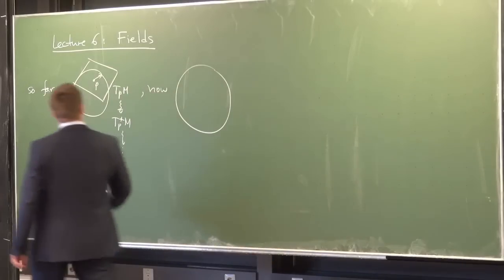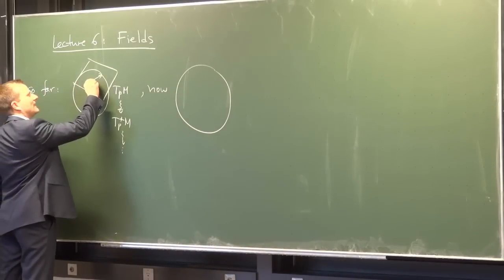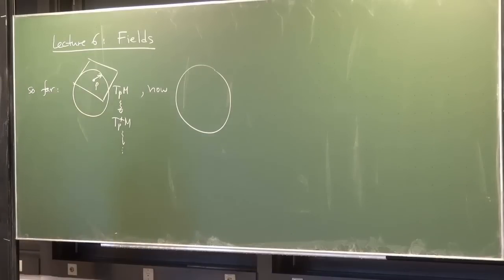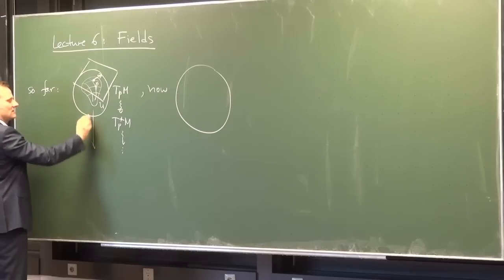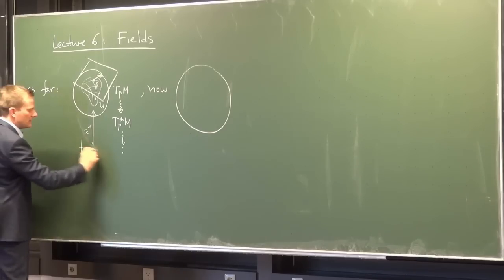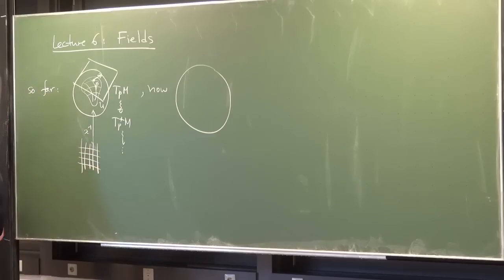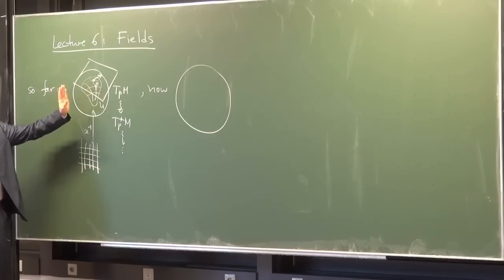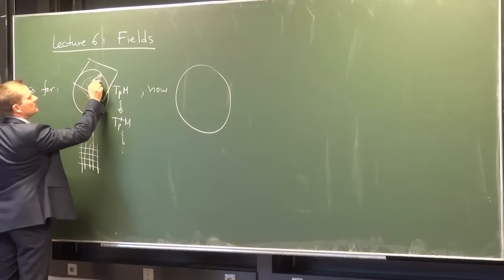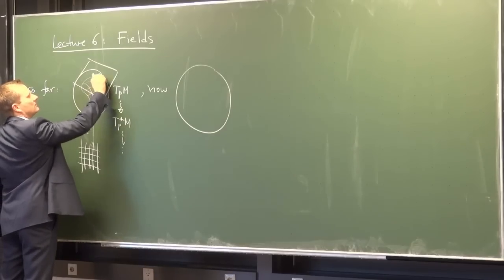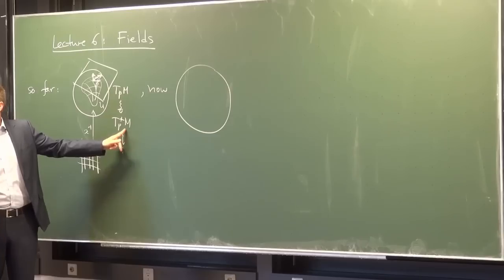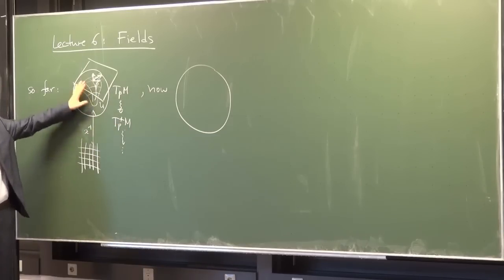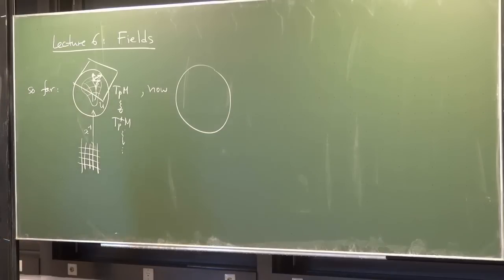So far we focused technically on a single tangent space and a vector in there, a co-vector, maybe choosing a chart on the manifold U, a coordinate-induced basis on that chart. So this would be, if you carry back the grid from ℝ^d back to the manifold, it may look like a polar coordinate grid, and that would induce a basis at this point, letting you decompose a vector in this basis — the ∂/∂xⁱ or, in the cotangent space, the dx¹ to dx^d basis induced from such a chart choice. Nevertheless, we were always technically at one point.